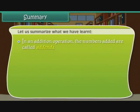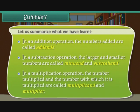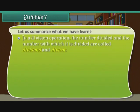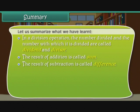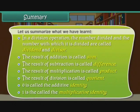Summary. Let us summarize what we have learned. In an addition operation, the numbers added are called addends. In a subtraction operation, the larger and smaller numbers are called minuend and subtrahend. In a multiplication operation, the numbers are called multiplicand and multiplier. In a division operation, the numbers are called dividend and divisor. The results are called sum, difference, product, and quotient respectively. Zero is called the additive identity. One is called the multiplicative identity.